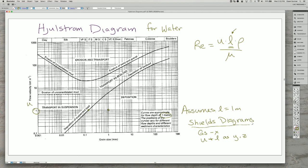So this is a more complicated relationship, and there have been a lot of really great flume experiments to calibrate the Shields diagram and the Hjulström diagram with the flow characteristics.